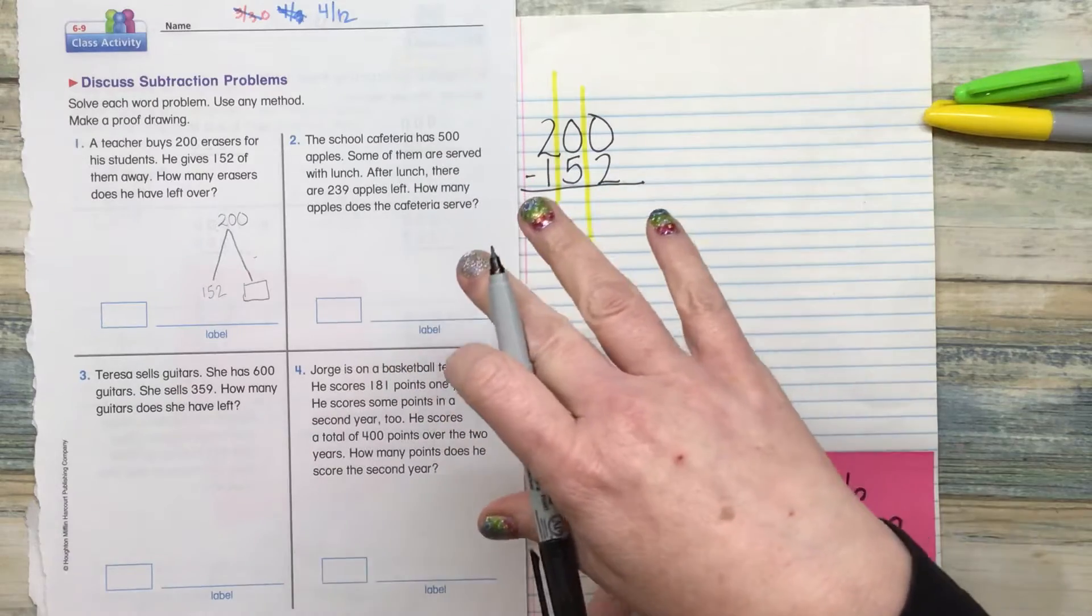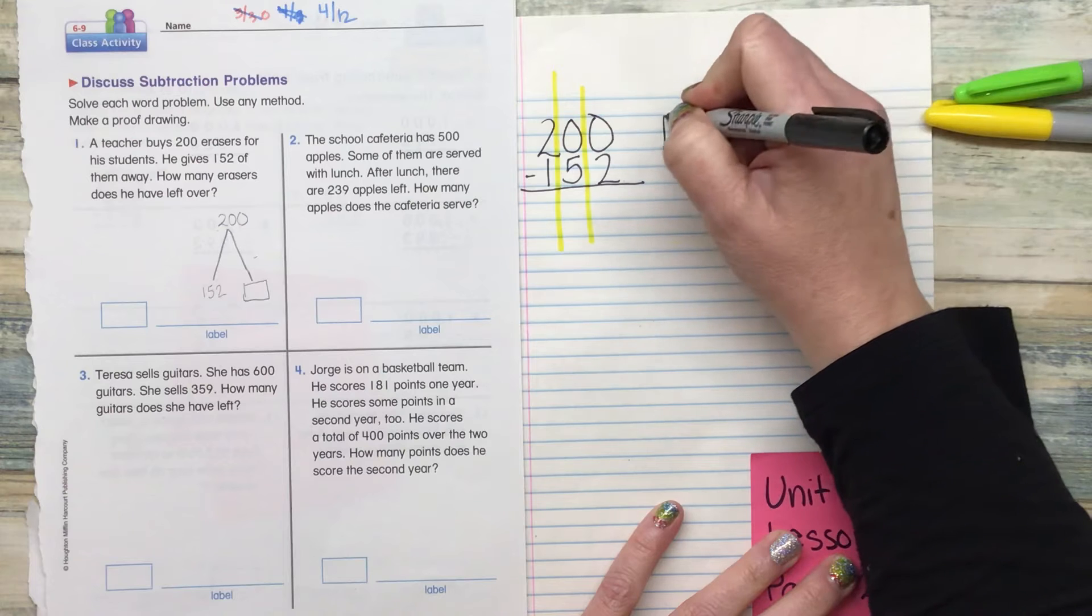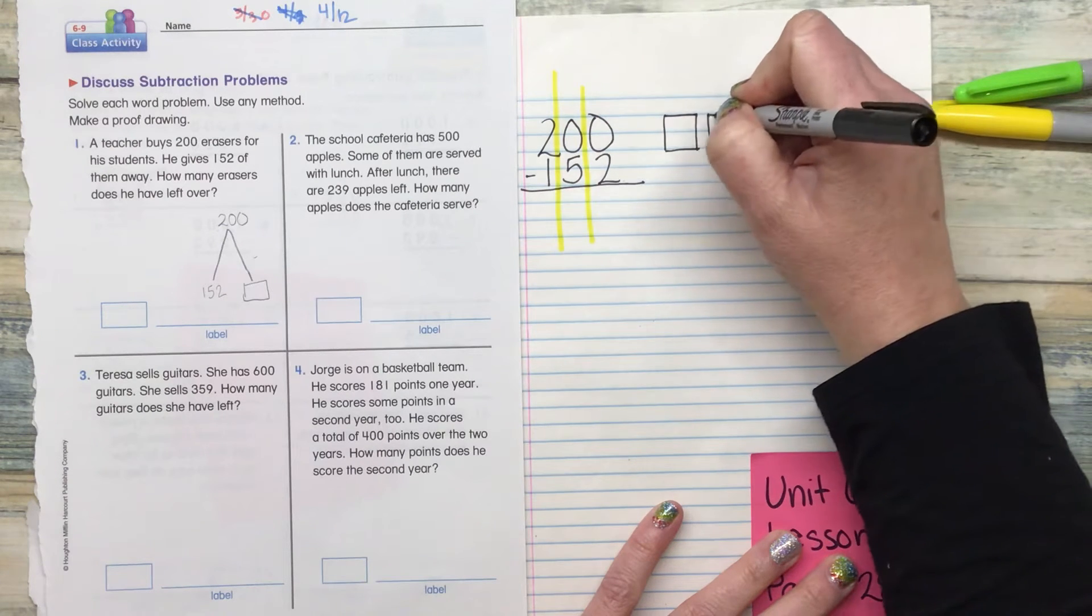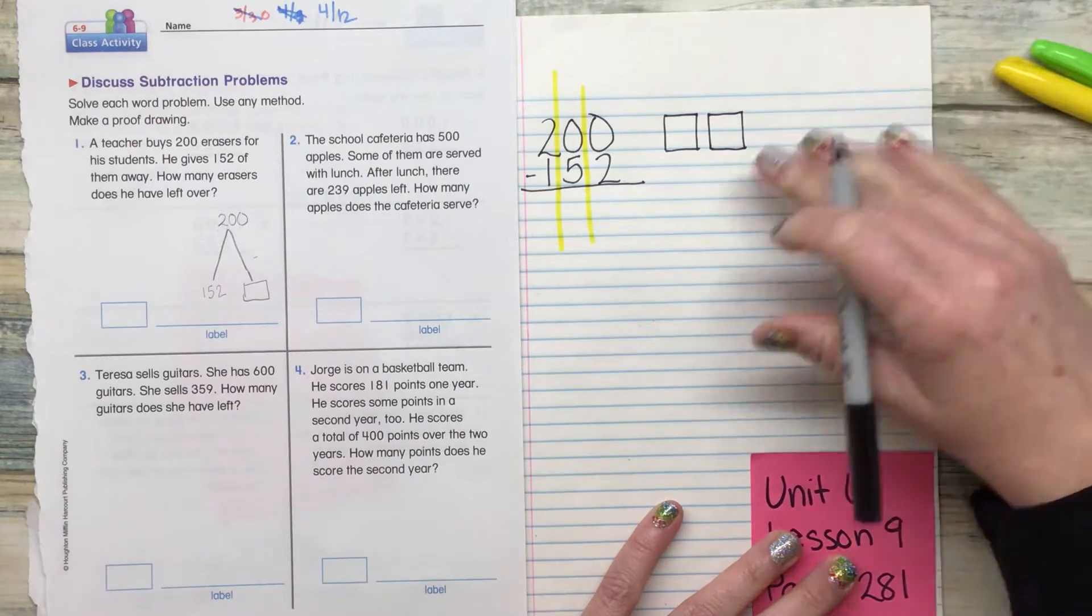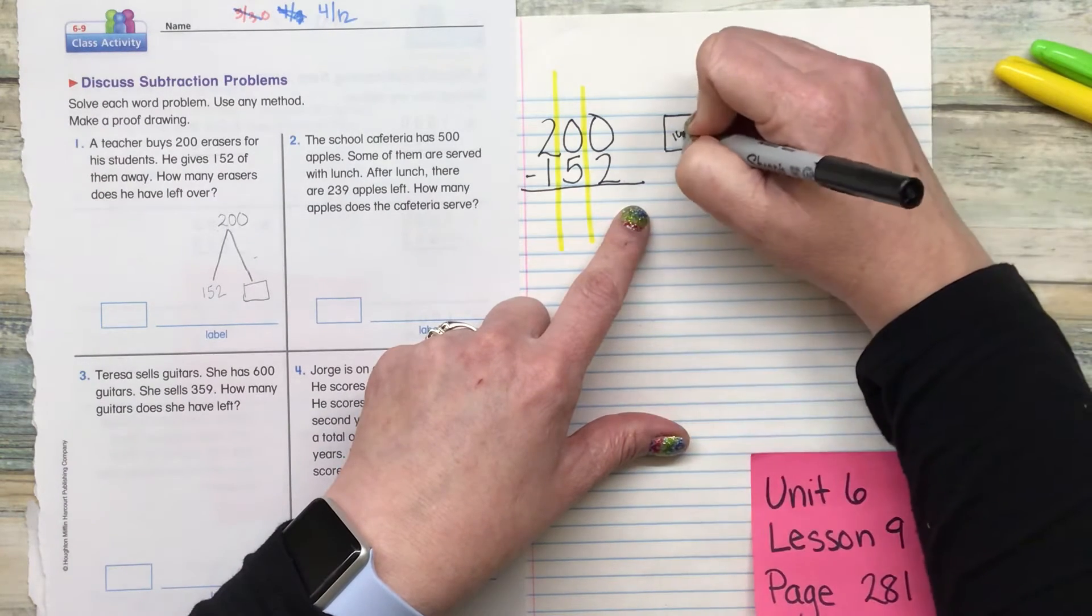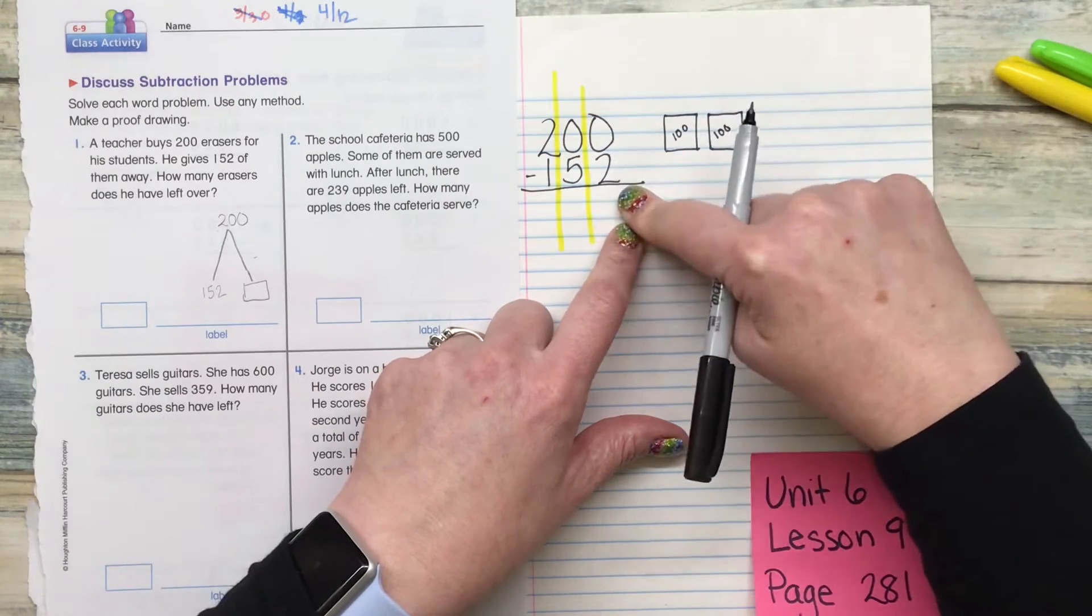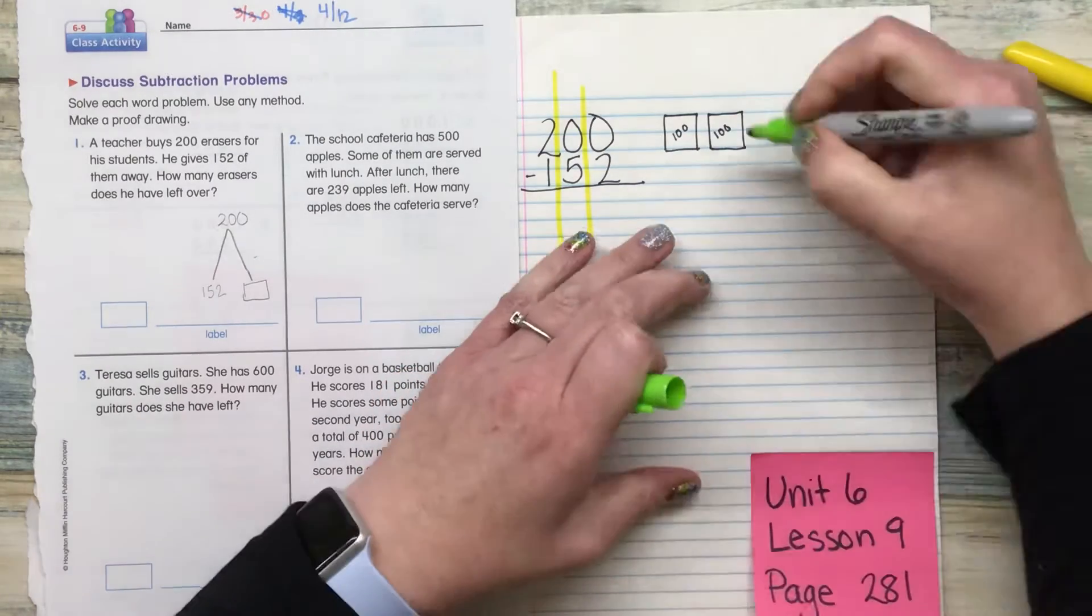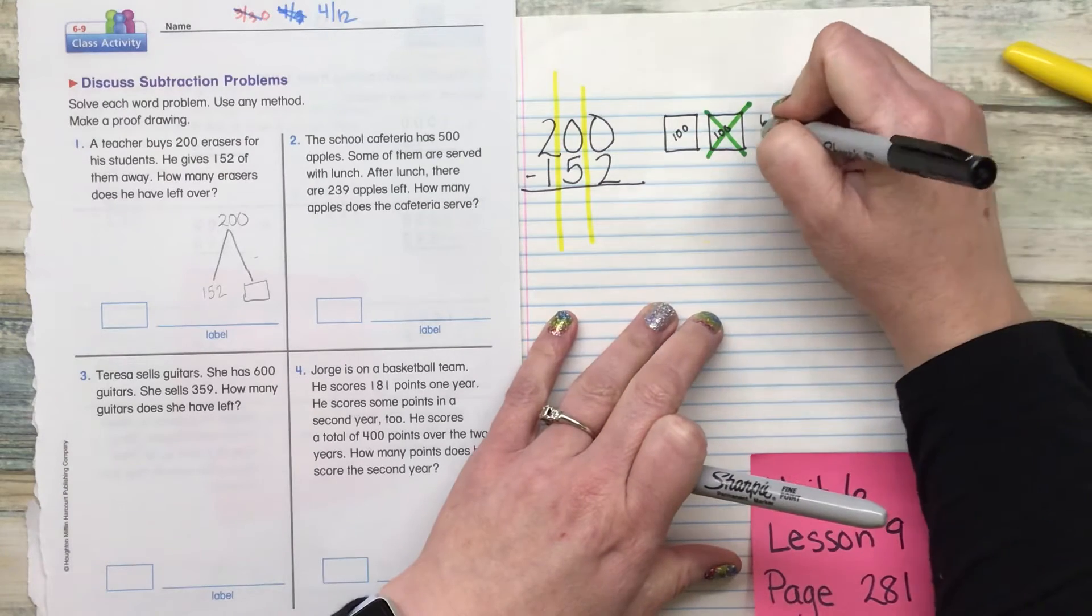Now they say to draw a proof drawing. So I'm going to go ahead and make a proof drawing. When we are working with subtraction, we only draw the top number. We don't draw the bottom number. When we are working with addition, we draw both of those. Now when we look at this, we can see right away that we're going to have to break this apart because we have to be able to subtract something in the ones and something in the tens. So right away, I'm going to go ahead and break apart this 100 and I'm going to break it into 10 ten sticks.